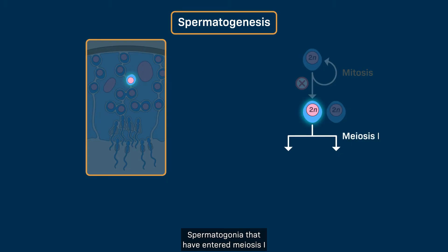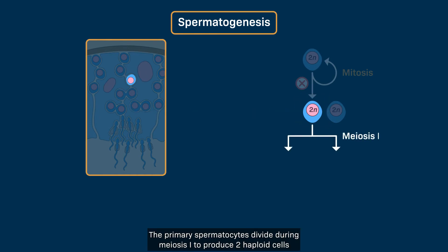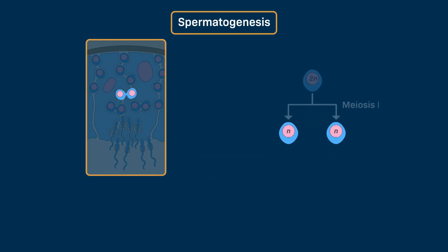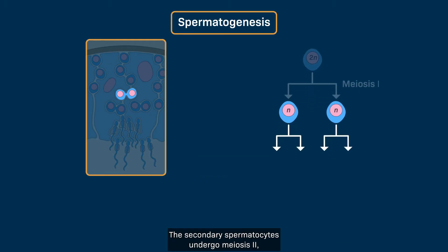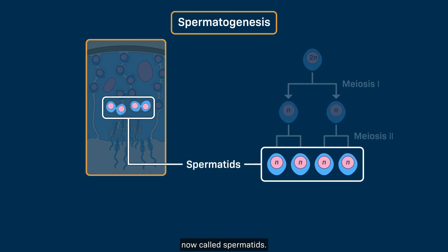Spermatogonia that have entered meiosis I are referred to as primary spermatocytes. The primary spermatocytes divide during meiosis I to produce two haploid cells referred to as secondary spermatocytes. The secondary spermatocytes undergo meiosis II, where each cell divides to produce two haploid cells, now called spermatids.